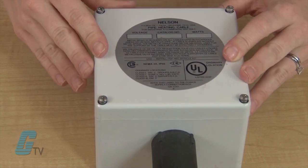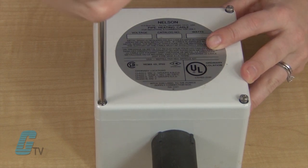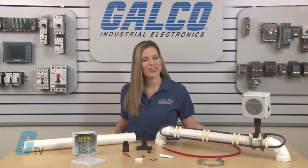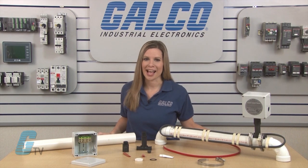Finally, I can place the label onto the box cover and fasten it to the junction box. Nelson Heat Trace PLT Series Connection Kit along with thousands of other products and services are available at galco.com.